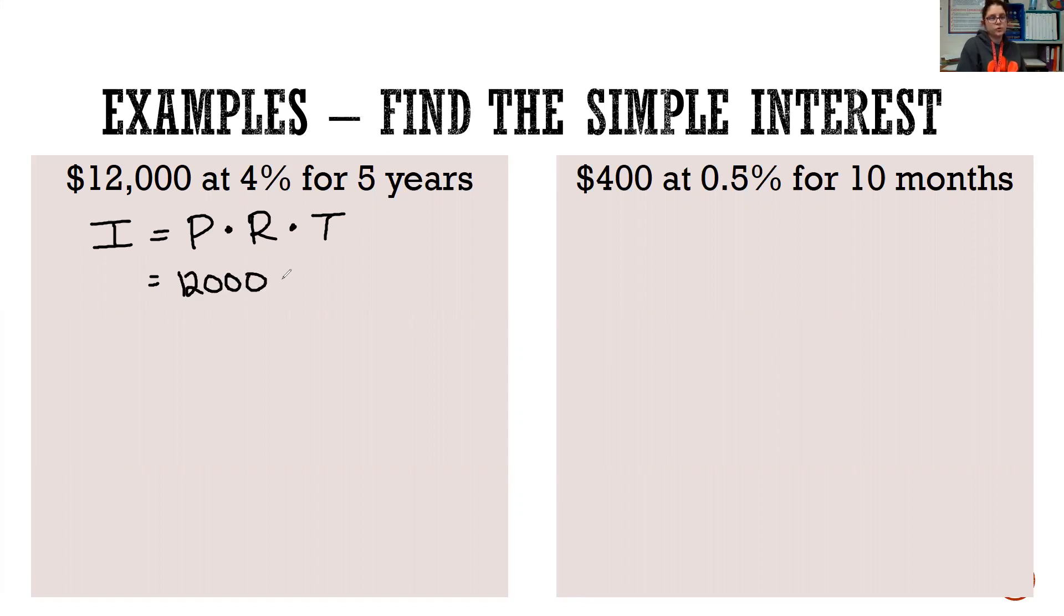So four divided by 100 would give us 0.04. And for five years. So we're just going to say five. So we're going to multiply all those together, 12,000 times 0.04 times five. So our interest, the amount of money that will be gained or added to our principal over five years is $2,400.